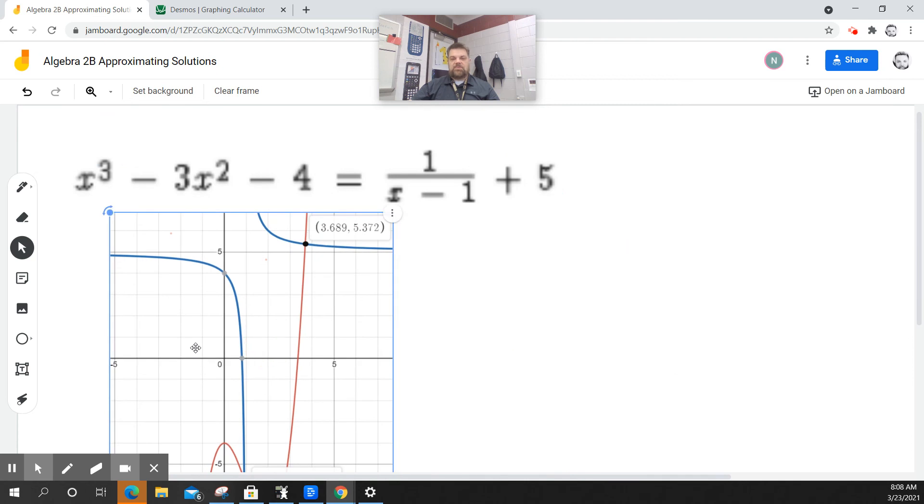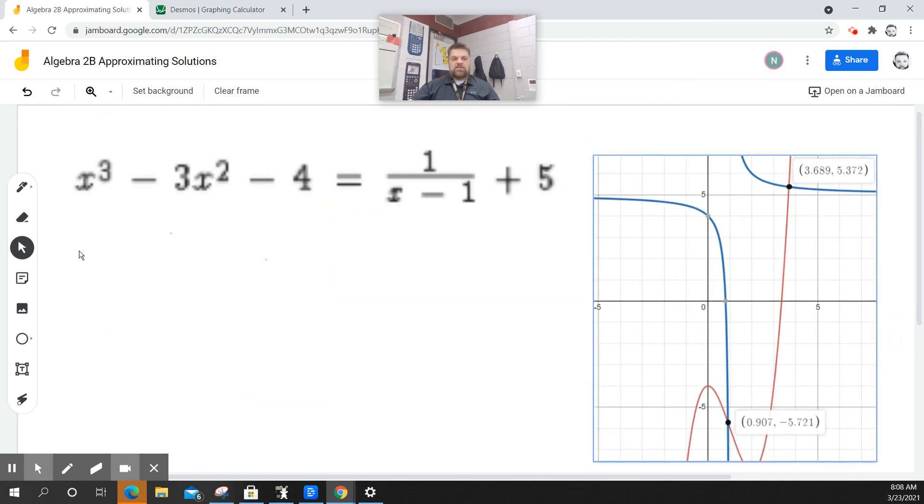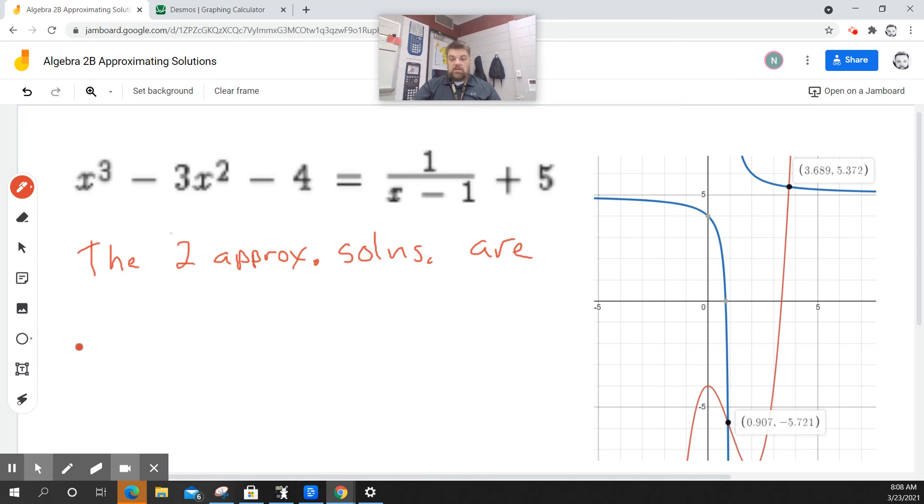So anyways, those are the two solutions. I'm going to round it. Let me slide this up here. So how do I write this? I'm going to say the two approximate solutions are X is approximately, I'm going to round it to 0.91 or X is approximately 3.69.